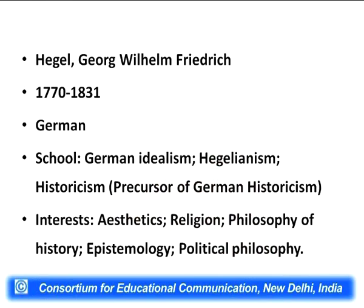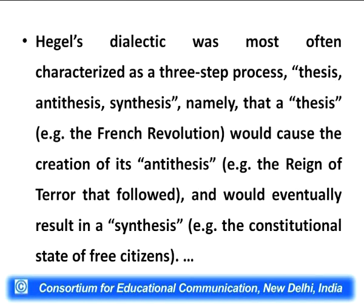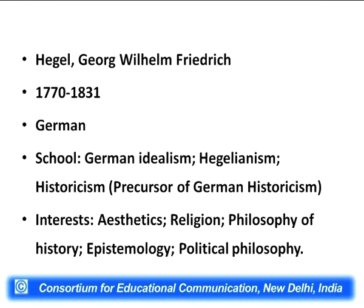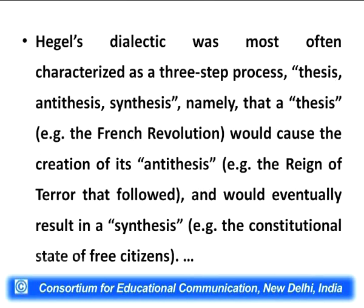In the previous lecture, we covered certain aspects of Hegel's thought, including aesthetics, religion, philosophy, history, philosophy of history, epistemology, and political philosophy. I will not repeat those. I will go to the next aspect of Hegel in the 19th century — what he became concerned with and the ideas he worked upon.